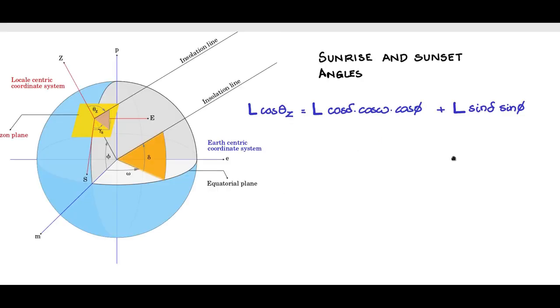Let us now obtain the sunrise and sunset angles. I have here the local centric coordinate system and the earth centric coordinate system, and I have also written down the insolation equation.